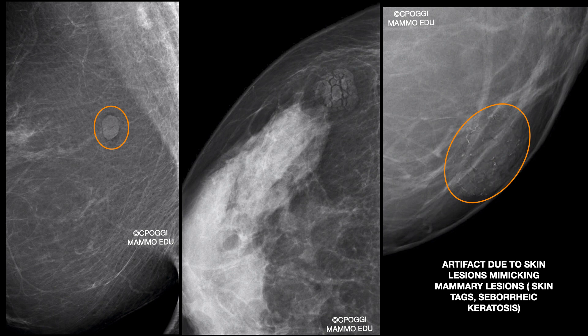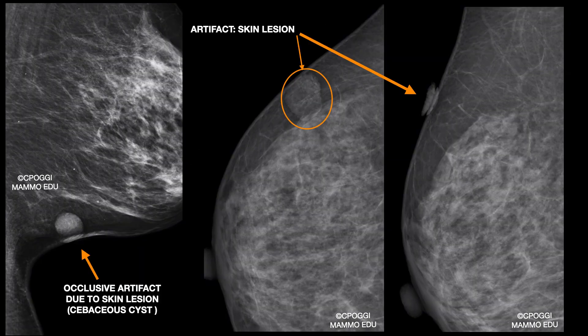These are skin lesions — we have to report them. Some of them are very recognizable on the image. A sebaceous cyst, like this one, could be visible. We can say there are occlusive artifacts able to hide tissue when they are large. The possibility to image them tangentially eliminates any doubts.